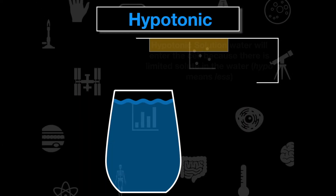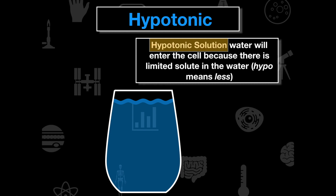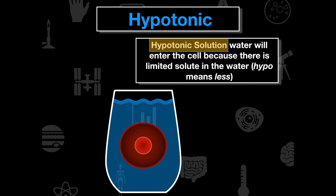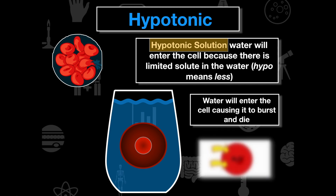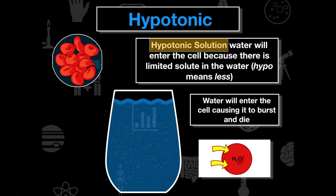In a hypotonic solution, water enters the cell because there's very little solute in the surrounding water. We have no salt in the water but lots of salt in the cell. So water moves into the cell, causing it to burst and die. This happens because there's more salt inside the cell compared to the outside, so water wants to move in.